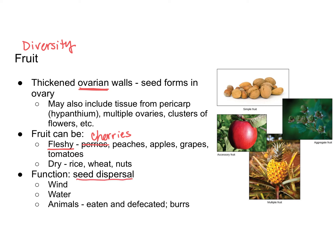The main function of fruit is seed dispersal — the goal is to get seeds transported somewhere else so they can inhabit another area. Different seeds have different modifications depending on how they are typically dispersed. Some fruits are light and feathery and are dispersed by wind; some are not dense and float, dispersed by water. Fleshy tasty fruit is often eaten by animals — the animal may discard the seeds or the seeds pass through the digestive tract and are deposited when the animal defecates, germinating wherever they land.